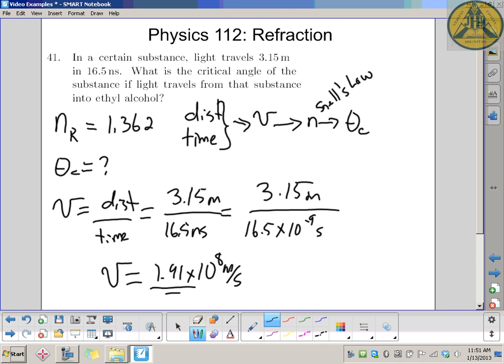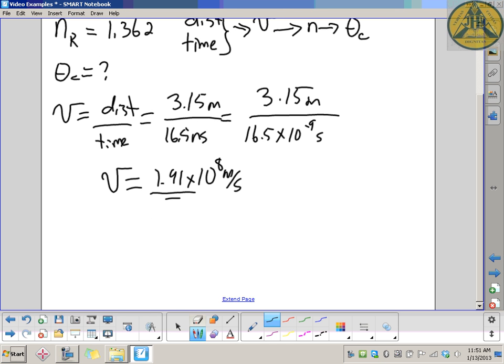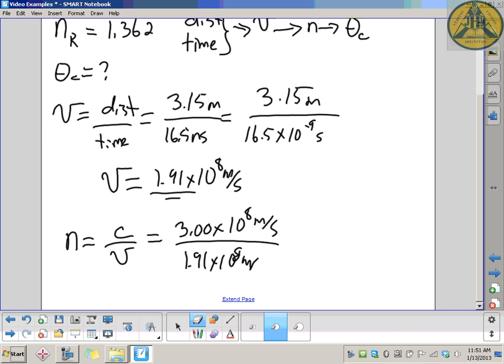Now we can calculate our index of refraction. In a perfect vacuum, taking that to be 3 times 10 to the 8 meters per second, over 1.91 times 10 to the 8 meters per second gives us 1.57. Which is good - that is greater than the index of refraction of the alcohol, which is 1.362.